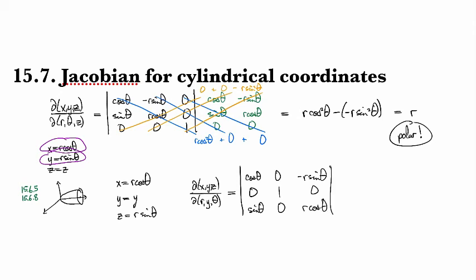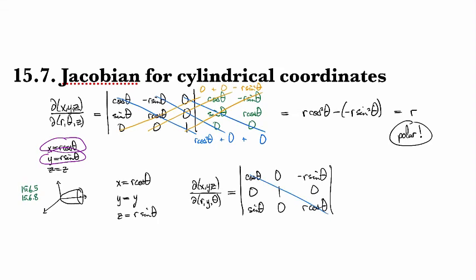And so when I do the zip, zip, zip, zap, zap, zap slashes again, this one is going to give me r cosine squared theta, and then I'm going to get zero from this one, and then I'm also going to get zero from this one because of these zeros over here.